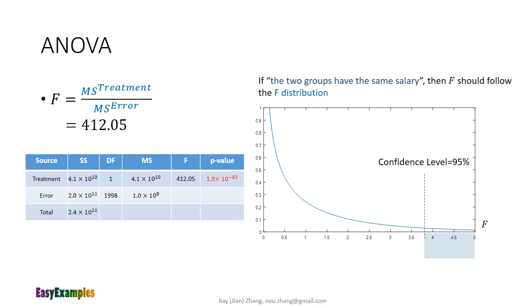In most analysis software, when you run ANOVA, you usually get a table as shown here in the result. The table has all the information that has been introduced in previous slides, including the sum of squares, degrees of freedom, mean squares, F-value, and p-value. The most important value in this table is the p-value. The smaller p-value means a more significant effectiveness for the treatment. It should be noticed that the p-value obtained from ANOVA is equal to the p-value from the two-sample t-test, which evidences that using both methods, we have the same probability of making type 1 error. Actually, when there are only two groups, the two-sample t-test and ANOVA always generate the same result given the same confidence level.